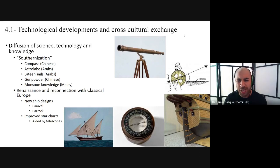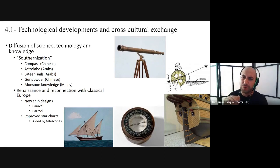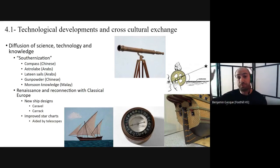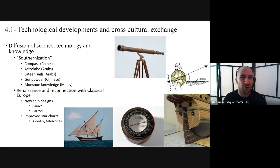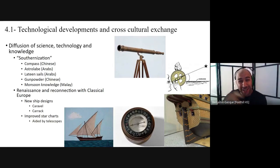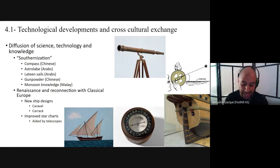You use an astrolabe to plot your location north or south of the equator based on the positions of stars. Latin sails are something developed by the Arabs — probably invented earlier by some other group, but the Arabs popularized them. These are the triangular sails that let you sail your boat against the wind.